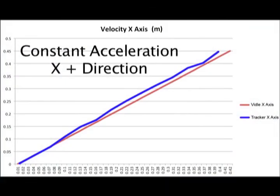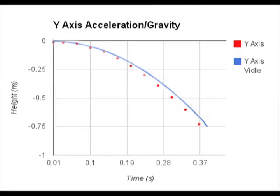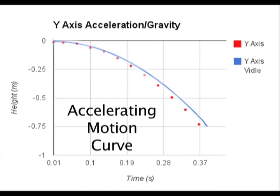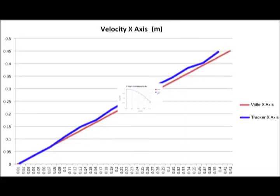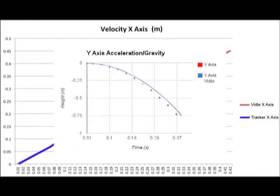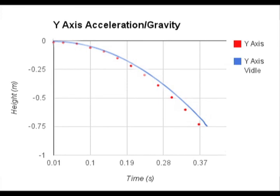This velocity along the x-axis graph compares the values from VPython to Tracker. Next we can see the y-axis acceleration due to gravity comparing the Tracker to the VPython program. As you can see there were very little discrepancies between the two sets of data and when compared to the results in the video they were very similar.